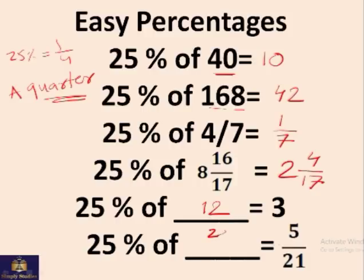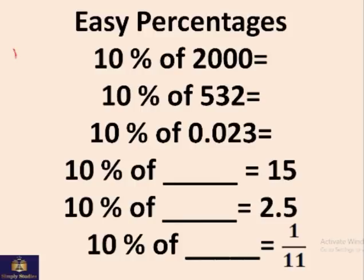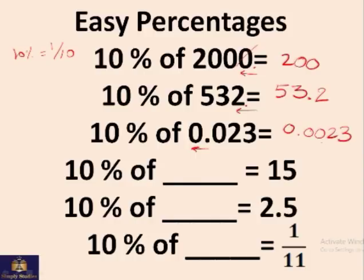Okay, 10%. 10% is one tenth. What we do if we have to find out 10% of anything, we just remove the last zero. So 10% of 200 must be 20, 2000 will be 200. If there's no zero, then we just introduce a decimal. So 10% of 532 will be 53.2. For 10% of this, the decimal is being shifted towards right. Because in these numbers the decimal was at the end, so if we shift it one more digit towards right, it will be 0.0023.